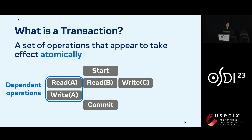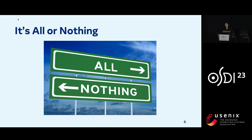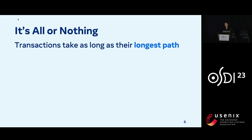Finally, we have the transaction commit. The main challenge in caching for transactions is their all-or-nothing property. What this means is that transactions take as long as their longest path. So unless we cache all the keys that are being accessed in parallel, we won't see any latency improvement for the transaction.